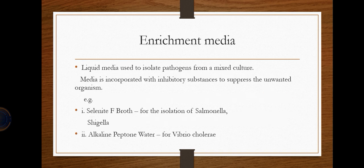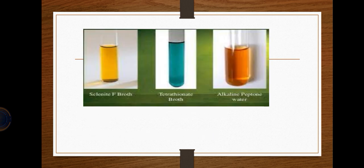Enrichment media are liquid media used to isolate pathogens from a mixed culture. Inhibitory substances are incorporated to suppress unwanted organisms. Examples include selenite broth used for isolation of Salmonella and Shigella, and alkaline peptone water used for Vibrio and cholera. Tetrathionate broth is another example of this type.